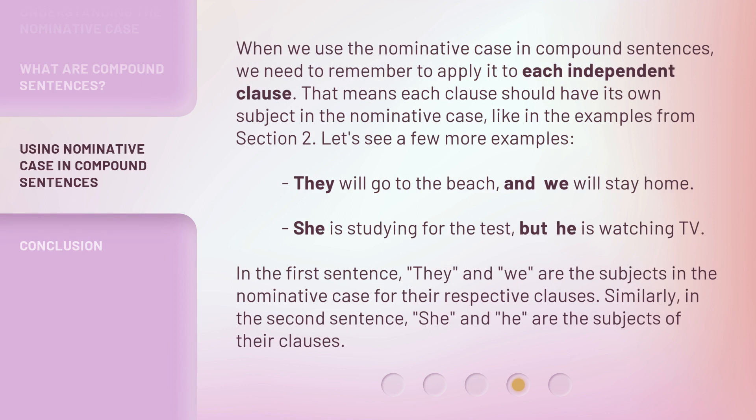When we use the nominative case in compound sentences, we need to remember to apply it to each independent clause. That means each clause should have its own subject in the nominative case, like in the examples from section 2. Let's see a few more examples: 'They will go to the beach, and we will stay home.'